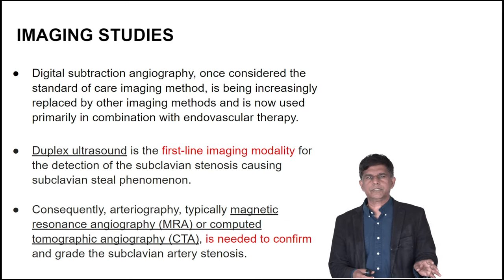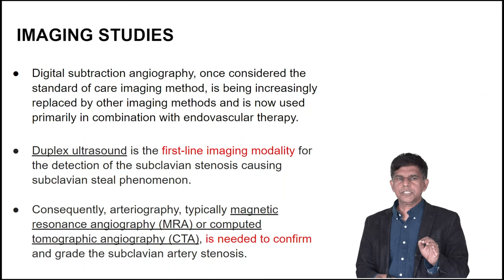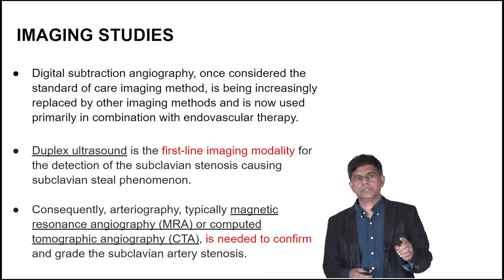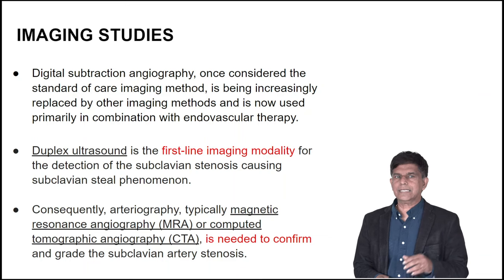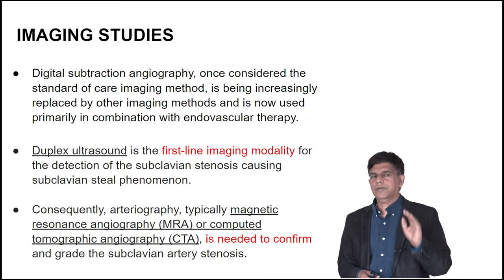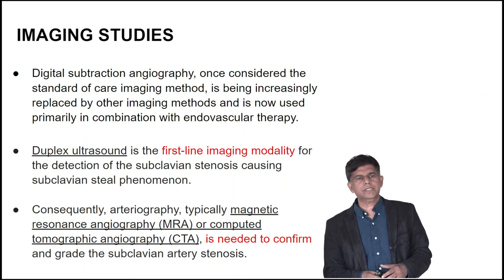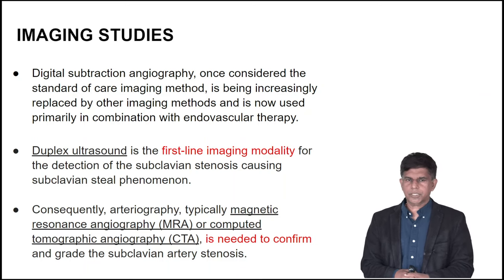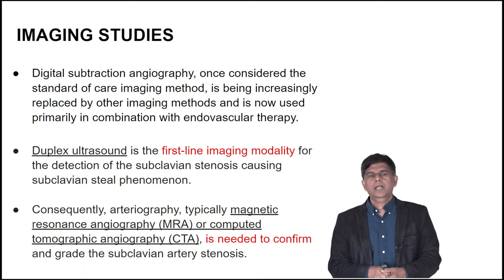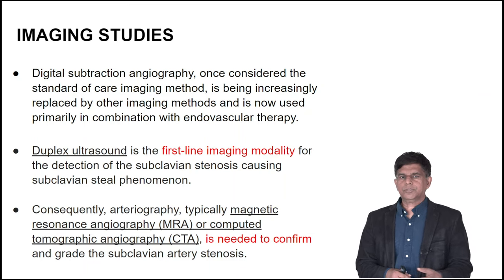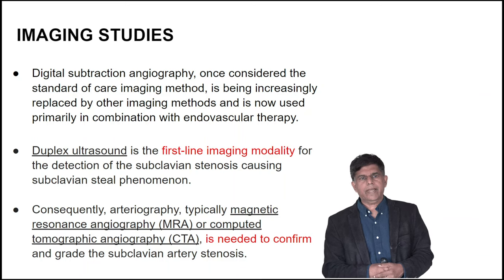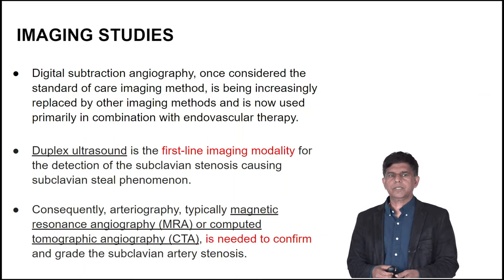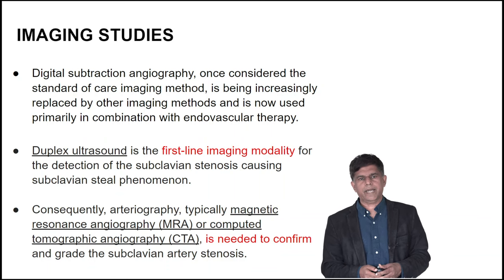Imaging studies — how do you diagnose it? That is the main purpose of this presentation. Digital subtraction angiography was considered the standard of care but is being increasingly replaced. For initial imaging, duplex ultrasound is the first-line imaging modality for detection of subclavian stenosis. Other options include MRA — magnetic resonance angiography — and CT angiography, which are used to confirm the diagnosis.